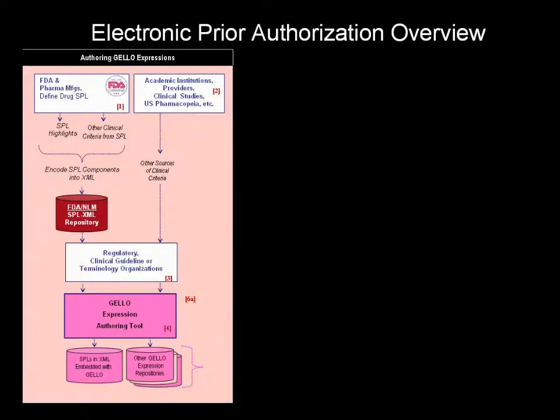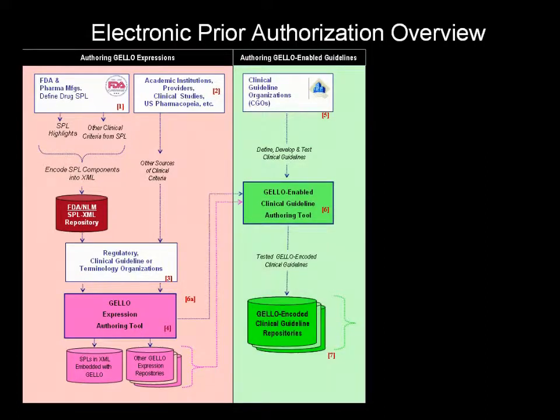To provide some context for the Jello authoring tool demonstration, we're employing the use case of electronically managing the prior authorization of a medicine. There are three basic components to utilizing Jello and prior authorization: authoring the Jello expression using content from the structured product label and other sources of clinical information, and embedding those Jello expressions in clinical guidelines using a guideline authoring tool.